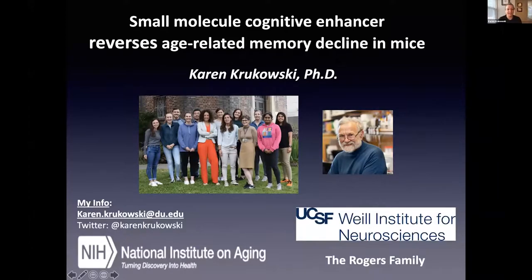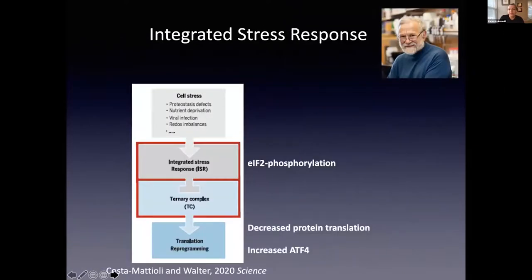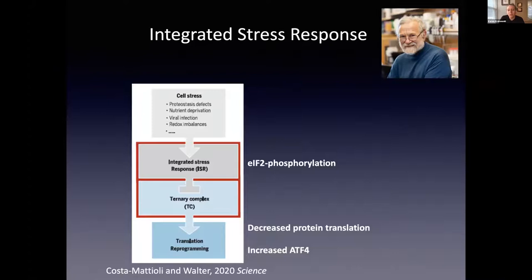Thank you so much. I'm excited to present today. I want to tell you about a story that started as a collaboration between Susanna Rossi and Peter Walter, who wanted to investigate if interference with the integrated stress response could affect memory loss. The integrated stress response, or ISR, is a universal intracellular stress pathway that responds to a number of different cellular stressors, resulting in phosphorylation of the translation initiation factor EIF2α, ultimately leading to decreased protein translation with a small subset of stress-mediated proteins upregulated.